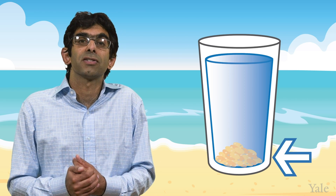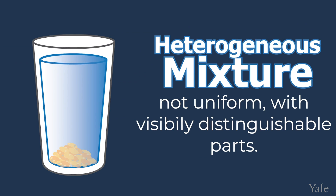However, if some sand ended up in your glass of water, you would be able to see all of the rocky bits sunk to the bottom of the glass. This would be a heterogeneous mixture because it is not uniform and has visibly distinguishable parts. Just by looking at it, you can tell it contains more than one substance. Other examples of heterogeneous mixtures are chocolate chip cookies, carrot cake, or Chex mix.